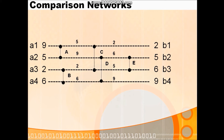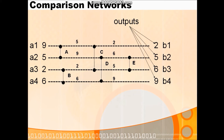For the third level comparator 'e', comparing a2 and a3: recent output is 6 and 5. Comparison gives minimum 5 on a2 and 6 on a3. So we get final output: 2, 5, 6, 9. The last comparator is only between a2 and a3, not a1 and a4, which is why the values 2 and 9 from level 2 are simply copied. Final sorted output: 2, 5, 6, 9.